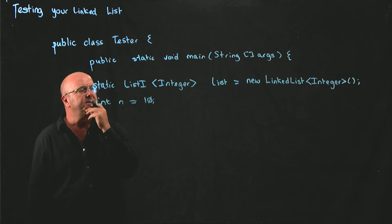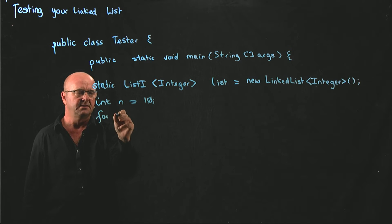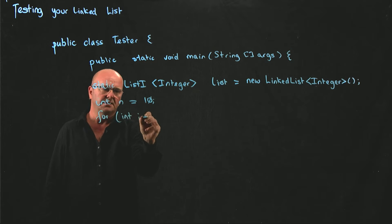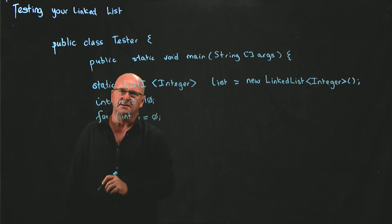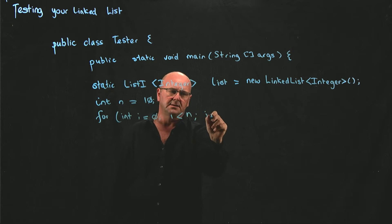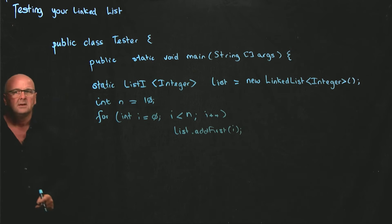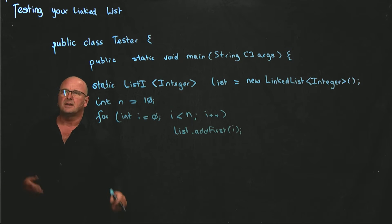Now all we've got to do is come up with ten numbers that we can add to our list. That's pretty easy. For int i equals zero, i is less than n, increment i, and we just call list.addFirst(i). So we've added ten things to our linked list.